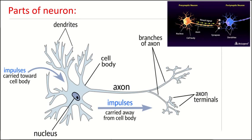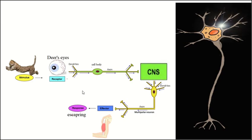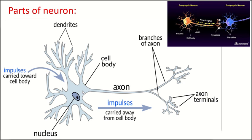The neuron is formed first of a cell body. The cell body is a typical cell — it has a nucleus, mitochondria, Golgi apparatus, and all the organelles found in any cell. The second part of the neuron are the dendrites.